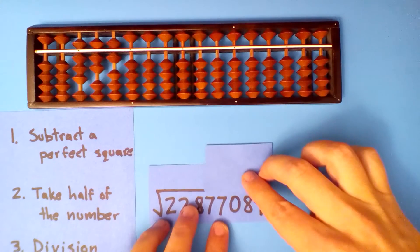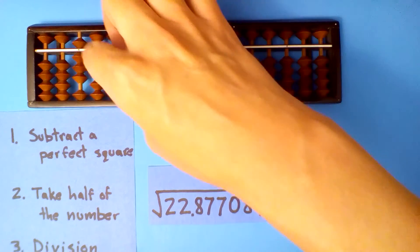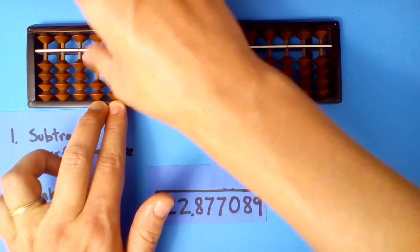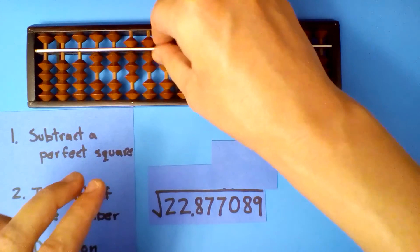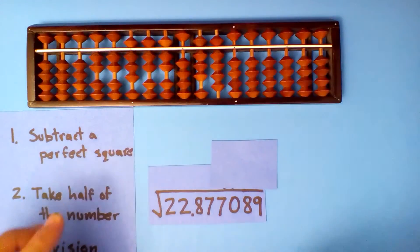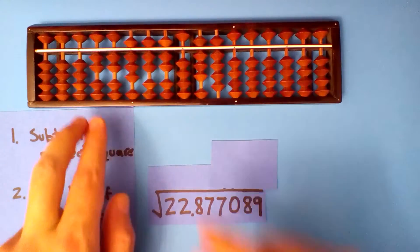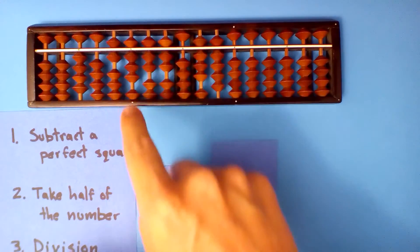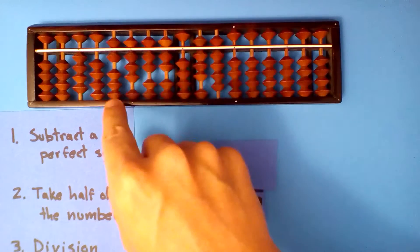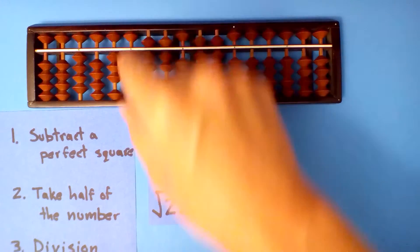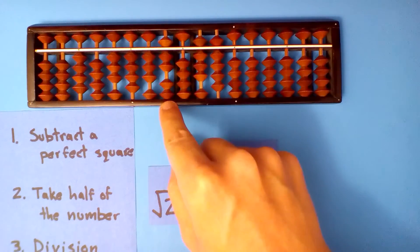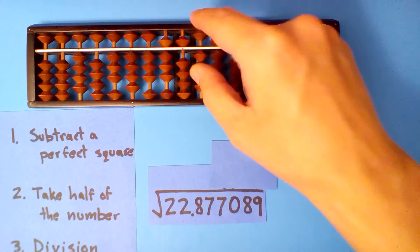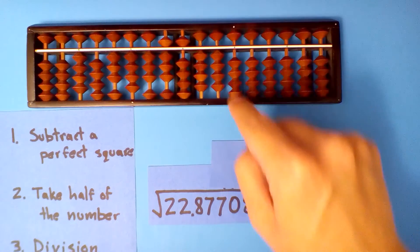One more example. The square root of 22.877079. Tens and hundreds: twenty-two, 8, 7, 7, 0, 8, 9. Subtract a perfect square: four squared is sixteen, subtract sixteen. Take half of what's left: half of 6, half of 8, half of 7, half of 17, half of 10, half of 8, half of 9, and half of 10.